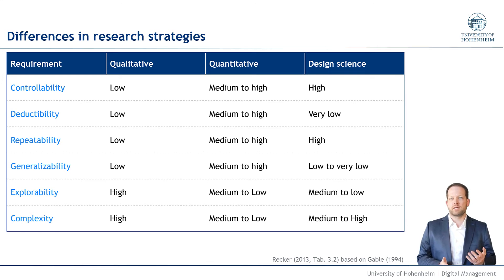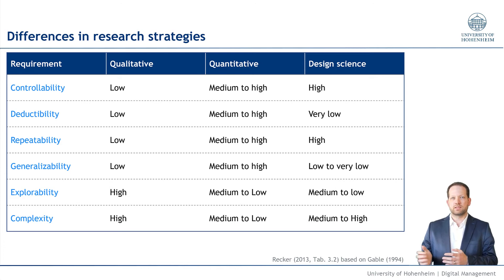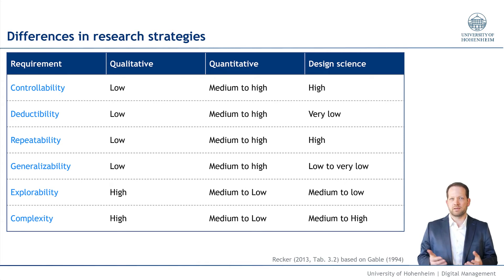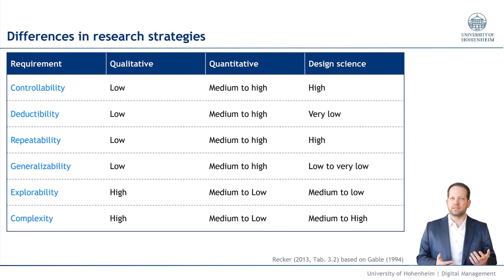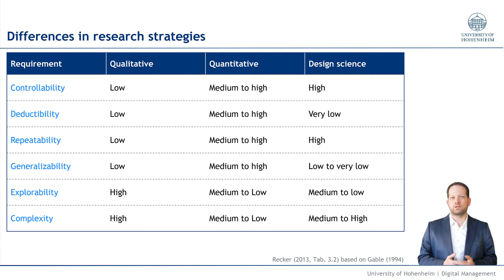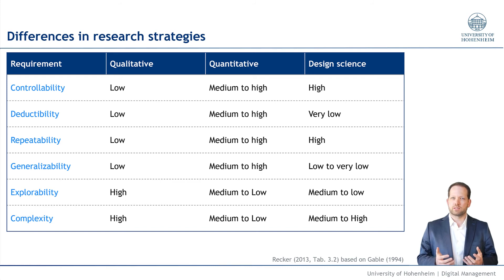Generalizability for the qualitative part is typically low because you only observed one or a few instances. For those you get a very rich understanding, but it's very difficult to transfer this understanding to other contexts. For the quantitative part, where you typically have a broader sample and apply statistical techniques, generalizability tends to be higher. But for design science, it's very low again. Explorability is about your ability to use exploration to fully understand the workings, the mechanisms, and the phenomena under study. This is typically rather high for qualitative studies, where you can really go in depth and explore new causal relationships, new reasons for these relationships, new constructs, and new understanding of the phenomena.